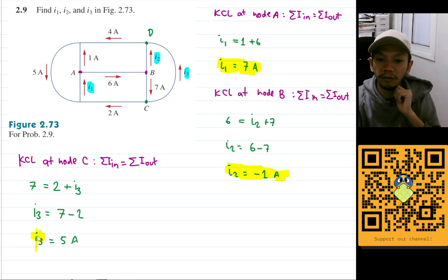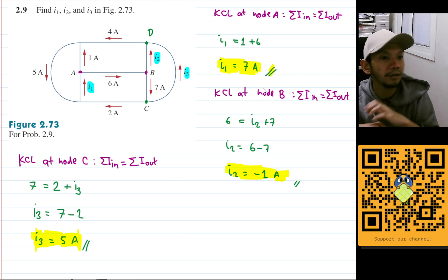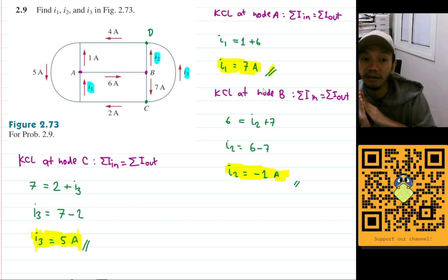So this is all, the answer. This is for i1, this is for i2, and this is for i3. Okay, that's all. Hopefully I did not make any mistakes in the calculation. Let me know if I did, and see you in the next video. Bye-bye.